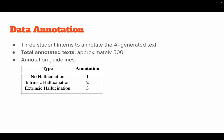We follow annotation guidelines where we define hallucination categories as intrinsic and extrinsic. There are three annotation types: one — no hallucination, two — intrinsic hallucination, and three — extrinsic hallucination.